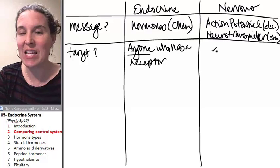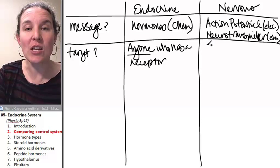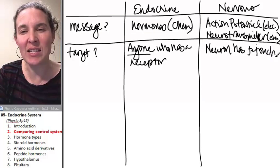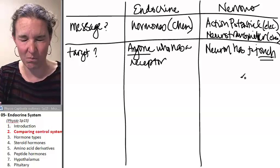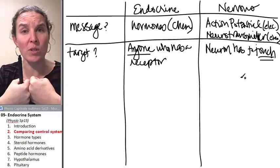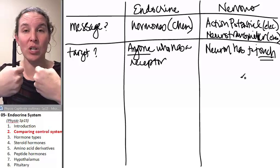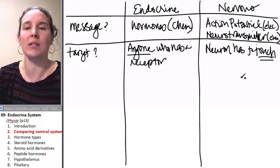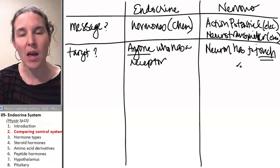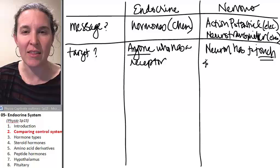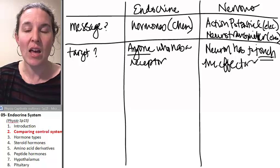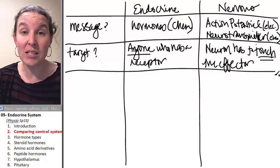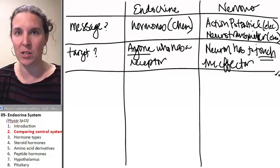The nervous system, it's extremely specific. The neuron has to touch. Now, I say touch, and I mean that vaguely. They're not actually making contact most of the time. Most of the time, there's a space between the neuron and the effector, but that space is really tiny. And so for all intents and purposes, especially compared to the endocrine system, they're basically touching, neurons touch the effector. So the target is super specific. If the neuron does not touch the effector, then that effector is not going to be a target of that neuron.